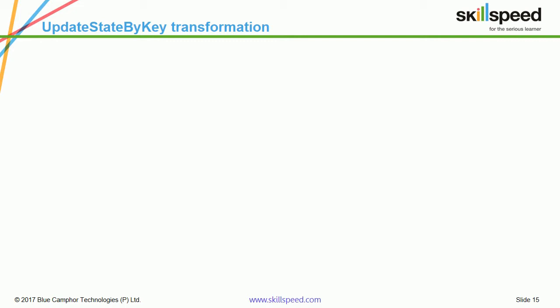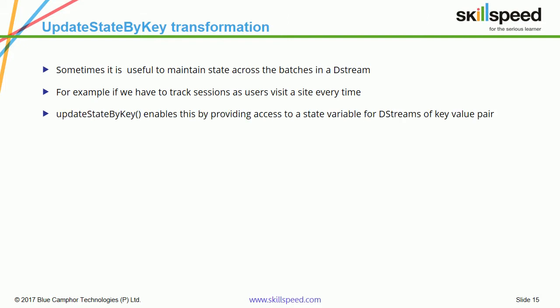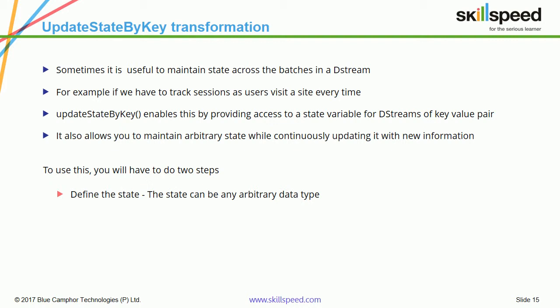Now let's look at updateStateByKey transformations. It can be very useful to maintain state information across a data stream. For example, if you are working on a project to track user sessions — say collecting a D-Stream from an e-commerce web server where many users are logged in — you need to maintain user state information. updateStateByKey enables you to do this: it gives you access to a state variable for a D-Stream of key-value pairs and allows you to maintain arbitrary state while continuously updating it with new information. To use this, you first define the state (any arbitrary data type) and then define an update function.